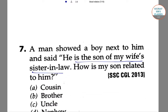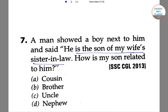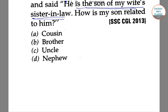In the next question, a man shows a boy next to him and says, 'He is the son of my wife's sister-in-law.' How is the boy related to the man? The following family diagram can be drawn from the given information.